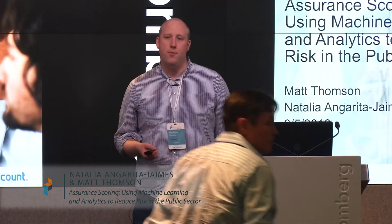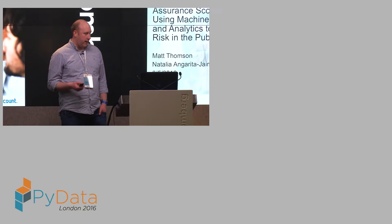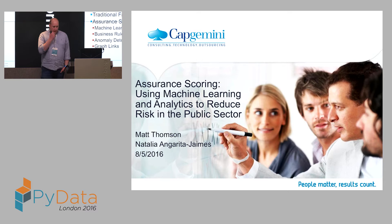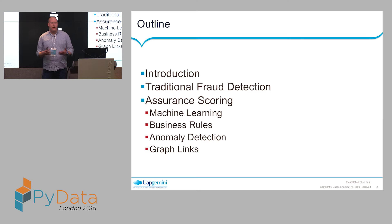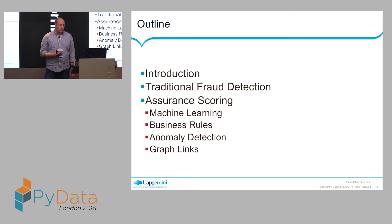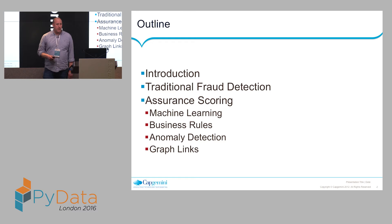We wanted to talk to you today about what we've been doing recently in the public sector, in particular using machine learning and analytics to reduce risk. Here's a quick outline: I'll introduce the problem we're trying to solve, which essentially boils down to a traditional fraud detection problem, then go through usual approaches and how we tweak it to identify low-risk people, and walk through the steps of building our assurance scoring pipeline.